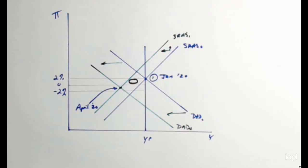Then the pandemic hits, and two things move off to the left simultaneously: the demand curve shifted to the left, and the short-run aggregate supply curve shifted to the left. With the demand curve, social distancing was imposed and various states shut down and imposed restrictions. That caused a collapse of the airline industry for the most part — a huge reduction in the volume of flights — and the same with the hotel industry. People stopped going to restaurants, so demand dropped off there. All of those things shifted the dynamic aggregate demand curve to the left.